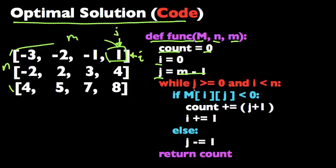So while j is larger than or equal to zero, so we still have more negative numbers to count, and i is less than n, so we haven't got to the last row yet.